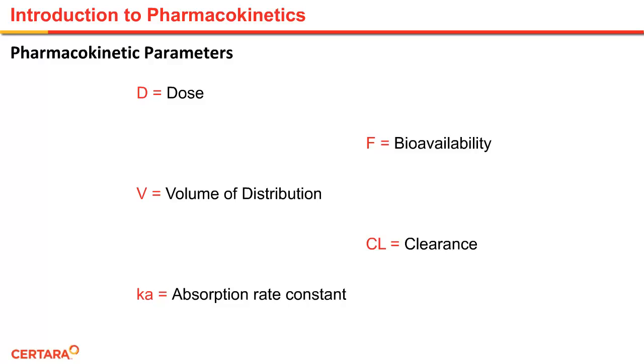These key physiological pharmacokinetic parameters are dose D, volume of distribution represented by the letter V, the absorption rate constant, how quickly the drug is absorbed in the body, that is ka or sometimes also represented by k01, bioavailability, the fraction of dose that you take that actually makes it into your bloodstream and is therefore available to produce an effect, and clearance, how quickly the body removes the drug from the bloodstream.